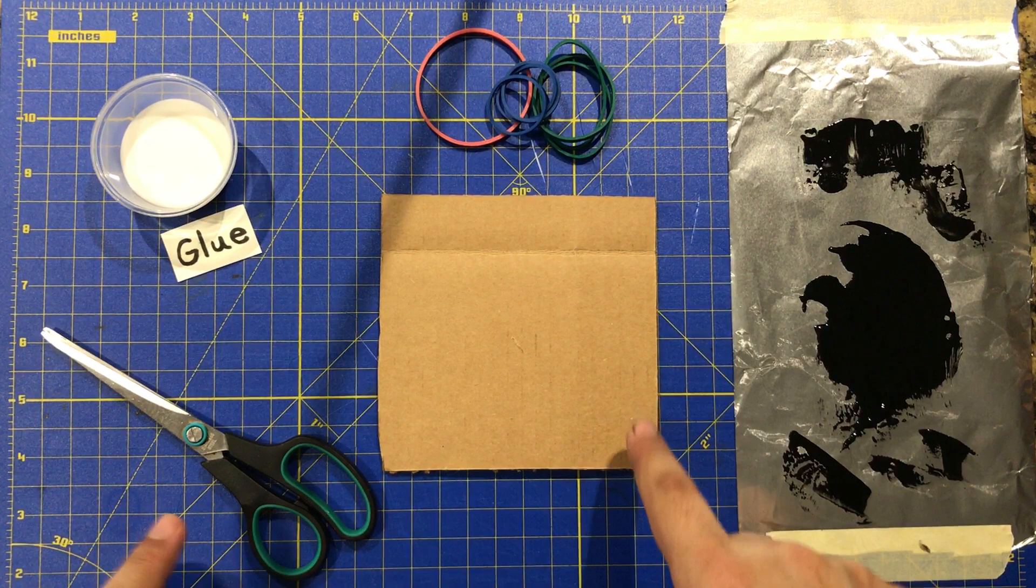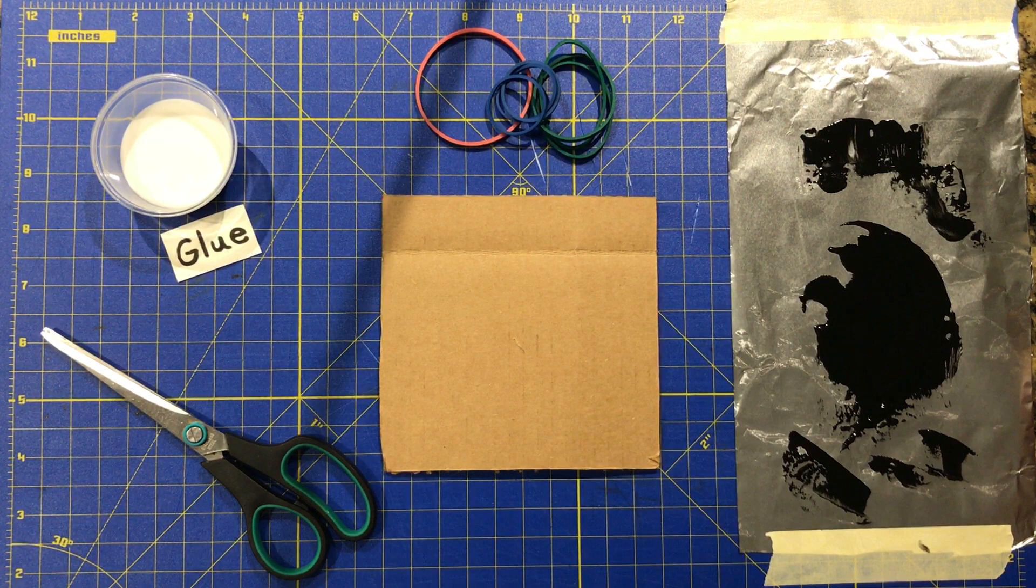Today you guys are going to make a rubber band print. To do that we need scissors, rubber bands, some type of backing - I'm going to use cardboard - and glue.